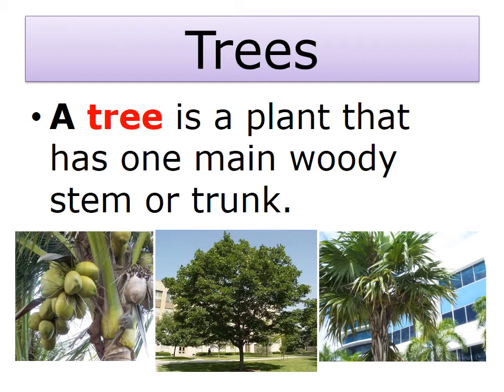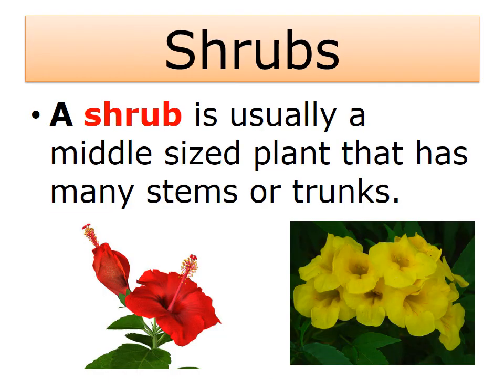Trees: a tree is a plant that has one main woody stem or trunk. Shrubs: a shrub is usually a middle-sized plant that has many stems or trunks.